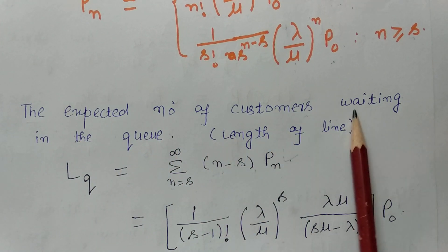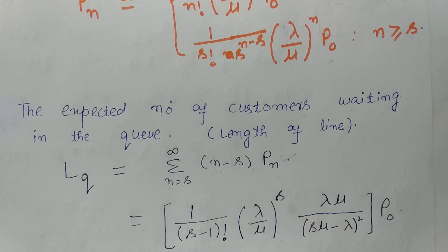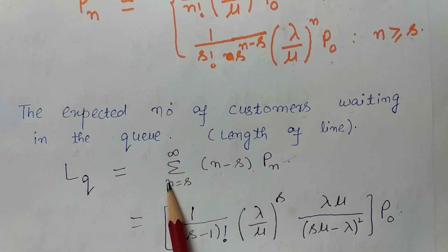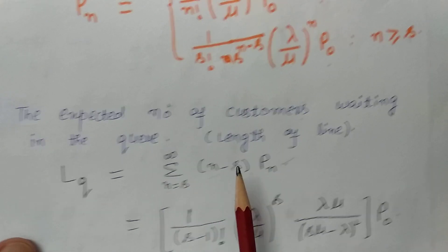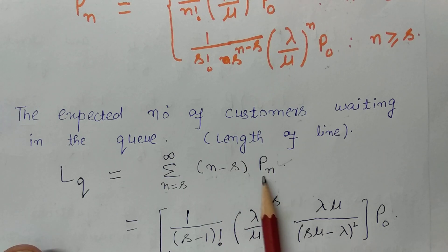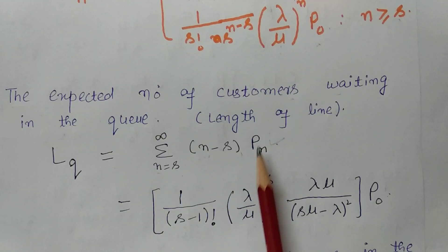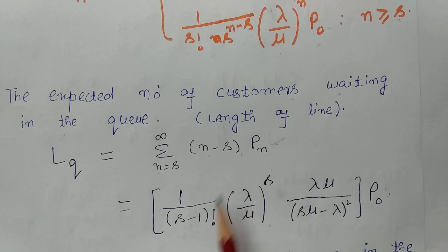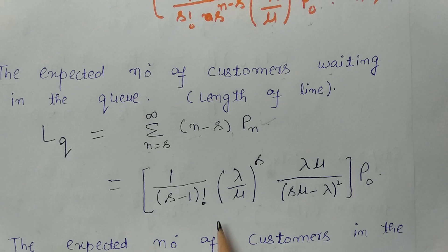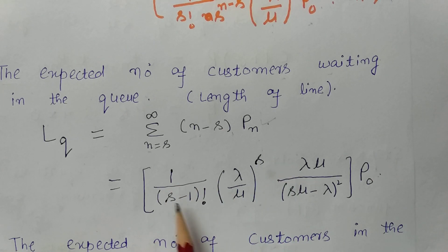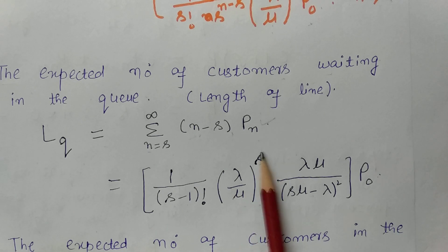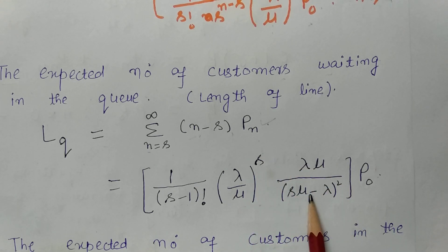Next, the expected number of customers waiting in the queue — Lq — is the length of the queue, calculated as the summation from n equals s to infinity of (n minus s) times Pn. After putting the value of Pn and simplifying, the result is: (1/(s−1)!) times (λ/μ)^s times (λμ / (sμ − λ)²) times P0.